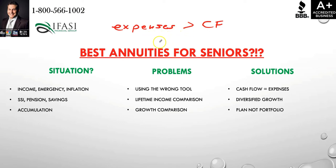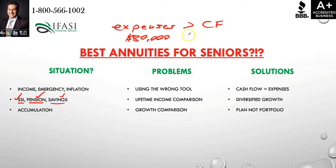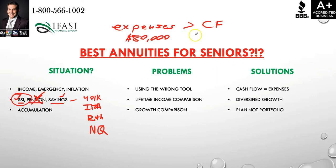When you look underneath the hood and ask what income you're going to receive throughout retirement when you're no longer working, that occupational income has to come off the table. This is where individuals typically leverage social security income, pension income if offered — though unfortunately the majority of Americans are not offered pension plans — and then savings. Let's say somebody has $80,000 in expenses throughout retirement, no pension plan, and their social security income is $30,000. Their only lifetime income stream is $30,000.